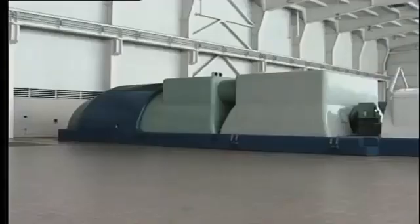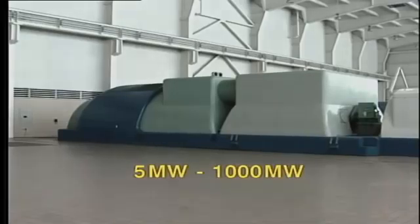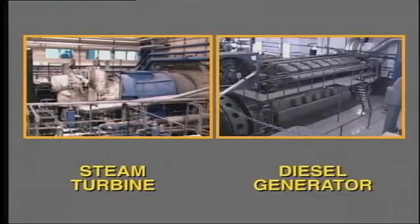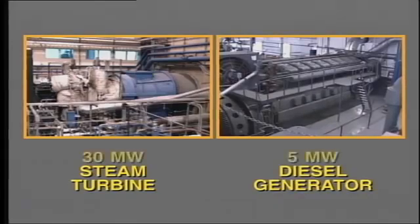The steam turbine is certainly one of the most popular prime movers, especially for driving large power generators. The size of steam turbines built and installed runs from about 5 megawatts up to 1,000 megawatts or more. What makes the steam turbine the preferred prime mover in comparison with, say, the diesel engine? There are quite a number of advantages, the main factor being that of physical size. For example, a 30 megawatt steam turbine is probably smaller than a 5 megawatt diesel. Another advantage is that the steam turbine is far less complicated and contains very few moving parts.